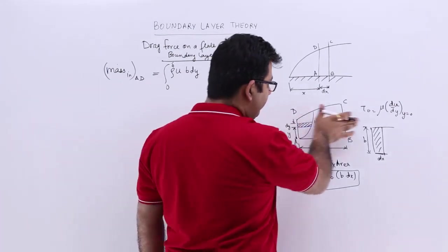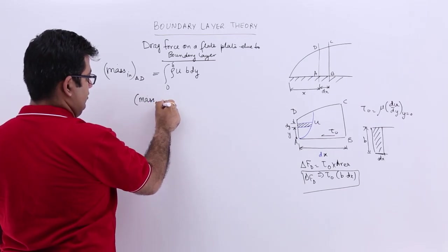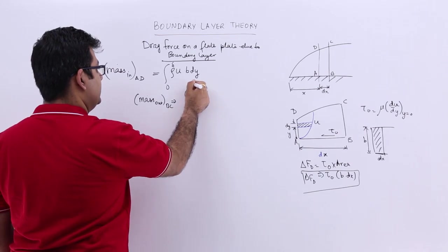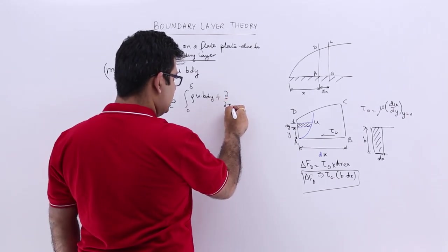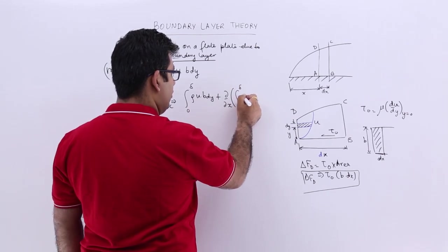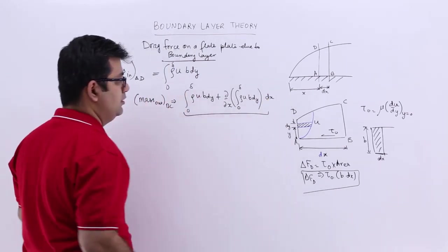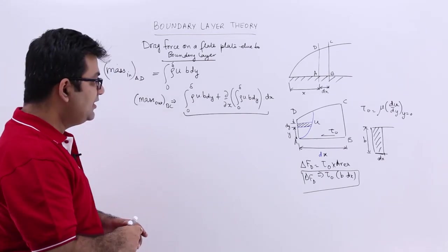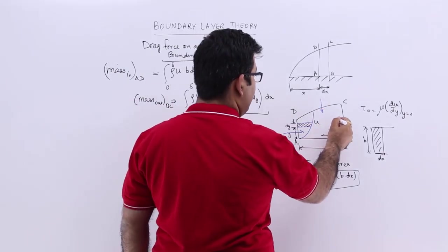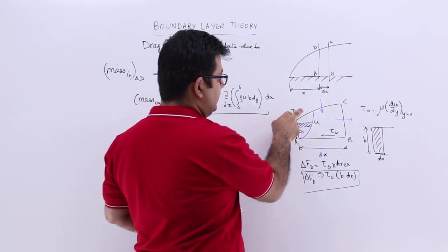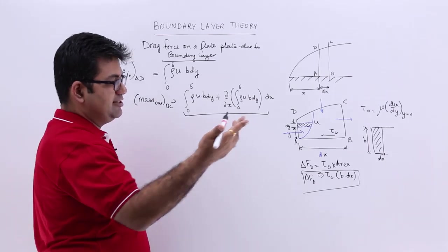There is also some mass leaving through face BC. That will be the integral 0 to δ of ρ·u·b·dy plus the partial derivative with respect to x of that integral times dx. Applying the continuity equation, mass in from AD plus mass in from DC equals mass out from BC.